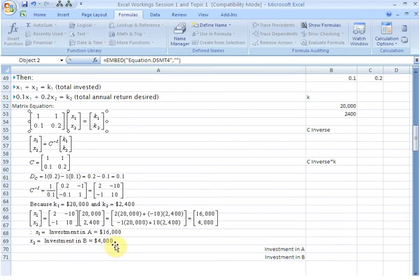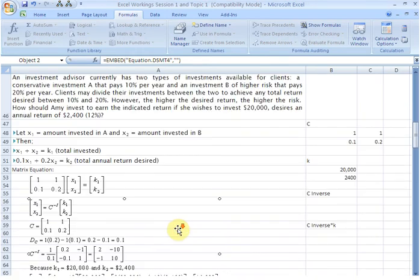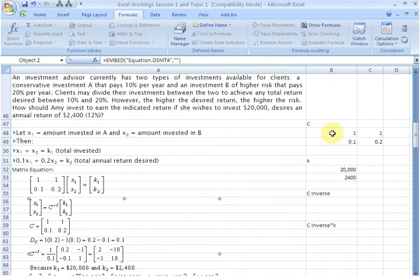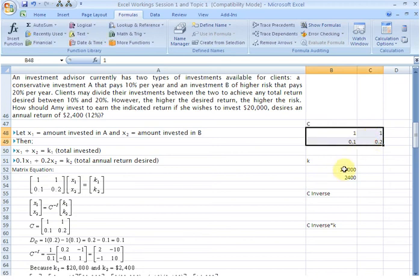Now let us do the same thing in Excel. What we need to perform is this step here, C inverse times the K vector. So I have already written the C matrix here, the coefficient matrix, 1, 1, 0.1, 0.2. And I have also written the K vector for this particular client, Amy.